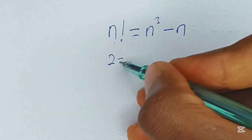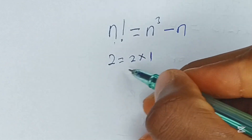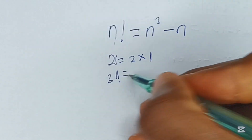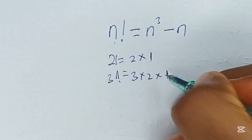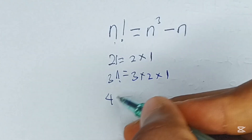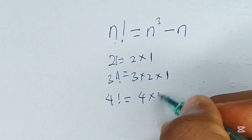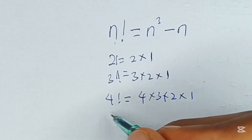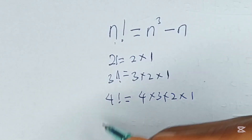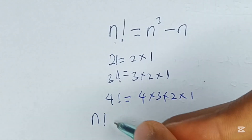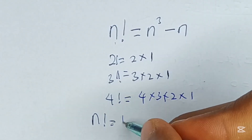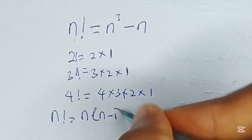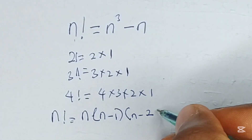If you have 2 factorial, it is equal to 2 times 1. If you have 3 factorial, it is equal to 3 times 2 times 1. 4 factorial will be equal to 4 times 3 times 2 times 1, and the same is for 5 factorial and 6 factorial. Hence, n factorial can be said to be equal to n into n minus 1 into n minus 2...